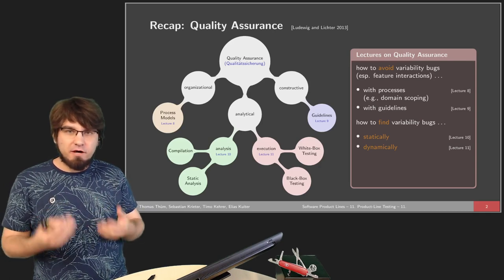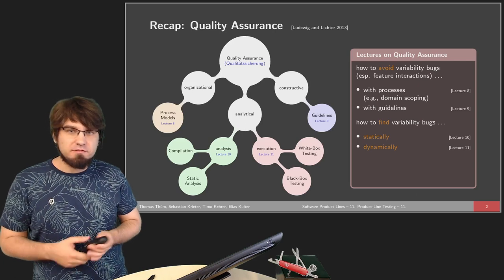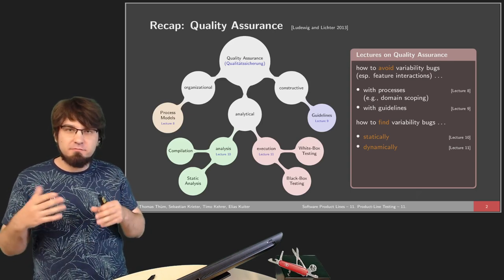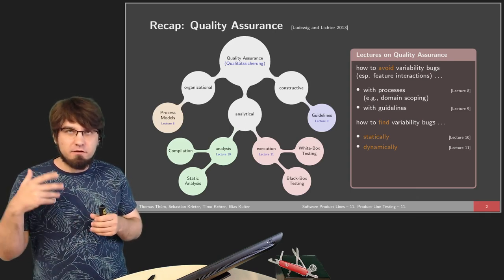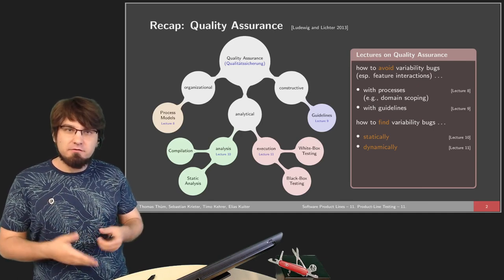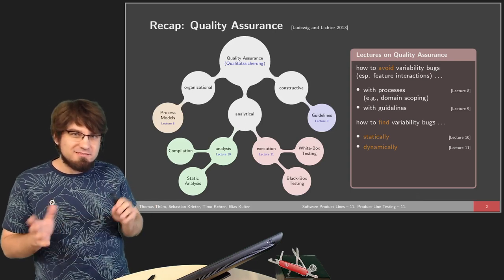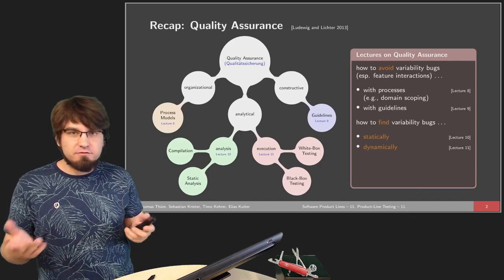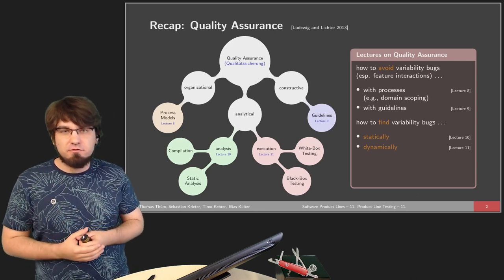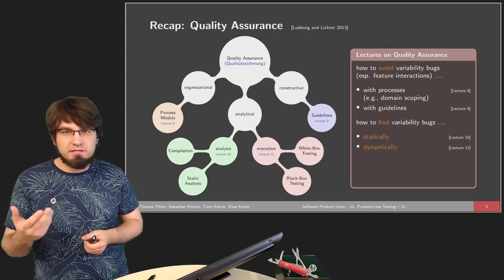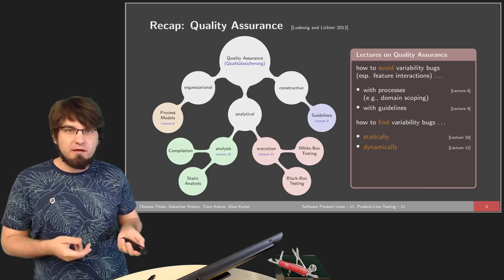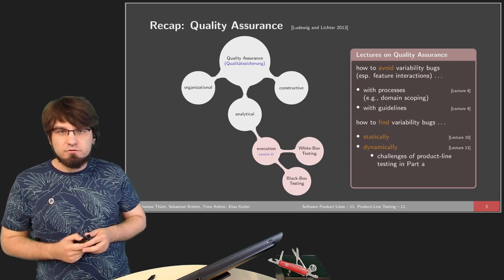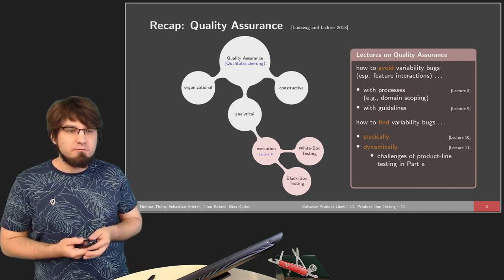The other approach is to simply compile and run your program and observe whether it behaves as desired. For this we have a black box approach, which ignores the source code — you put something in, get something out, and compare the actual output with the expected output. There's also a white box approach where you take the actual source code into account and can look at data dependency and control flow to reason about where particular bugs might be.